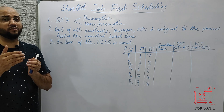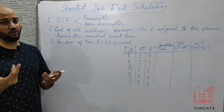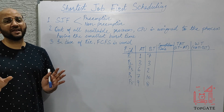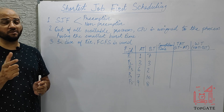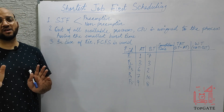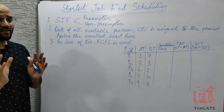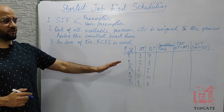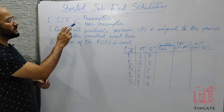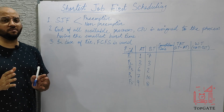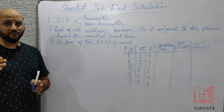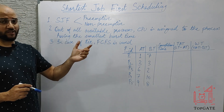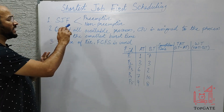SJF is a greedy algorithm, unlike FCFS. In SJF, we don't care whether the process arrives early or late, has high or low priority — we only look at the burst time. If it's shorter, we schedule it first; otherwise it waits. This algorithm has two variants: a preemptive one and a non-preemptive one.